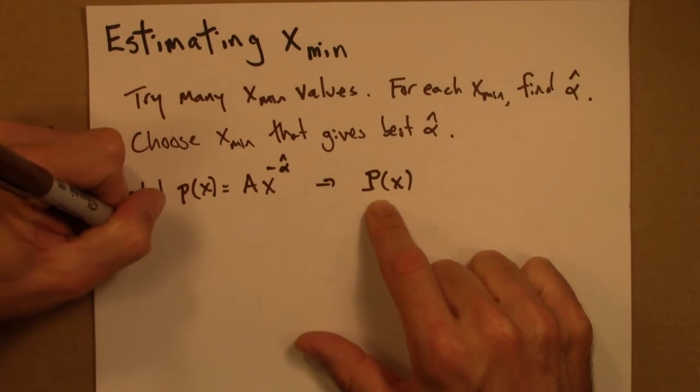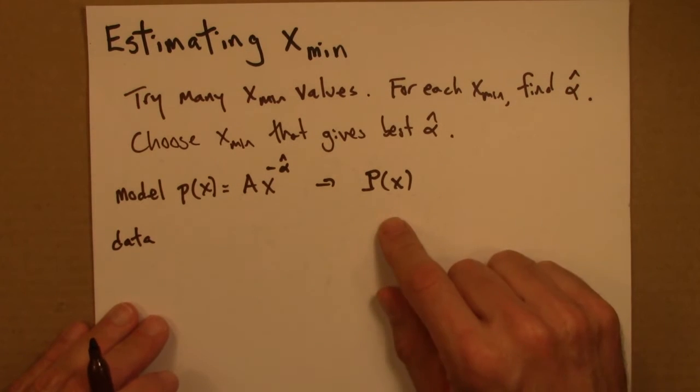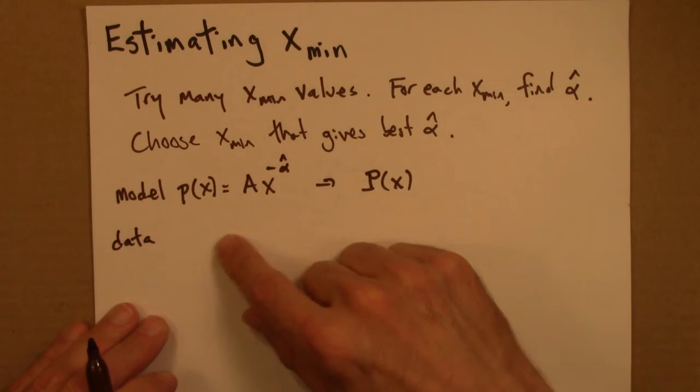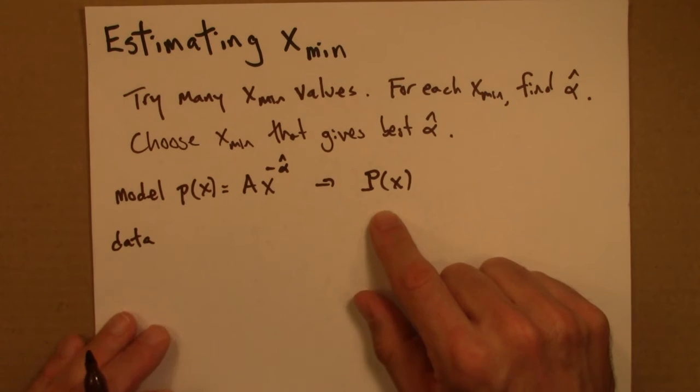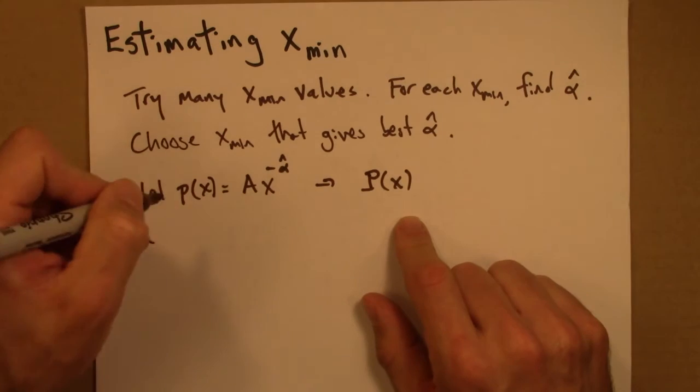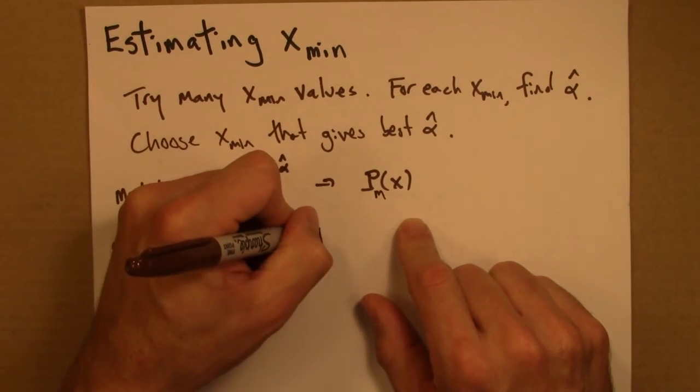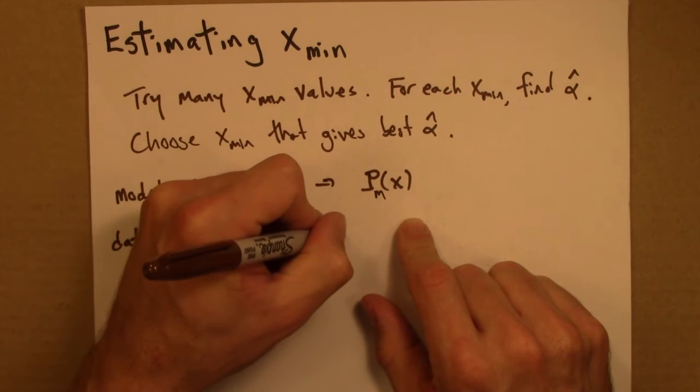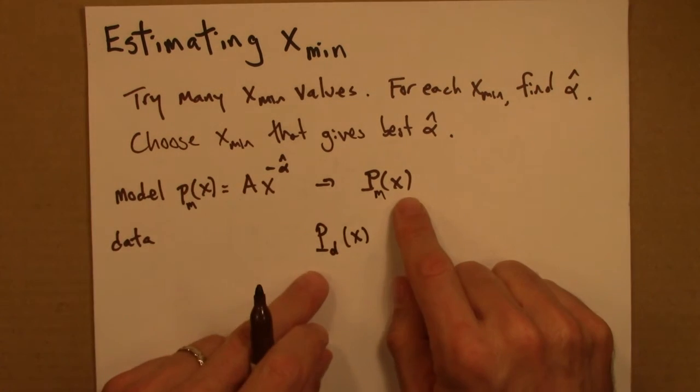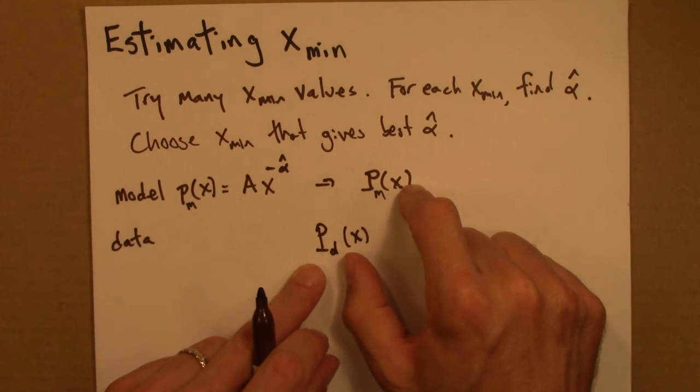We also have the data itself. And I can use the data to also come up with an empirical cumulative probability distribution. So maybe I'll denote this M for model and this for data. So the point is, I now have two cumulative distribution functions.